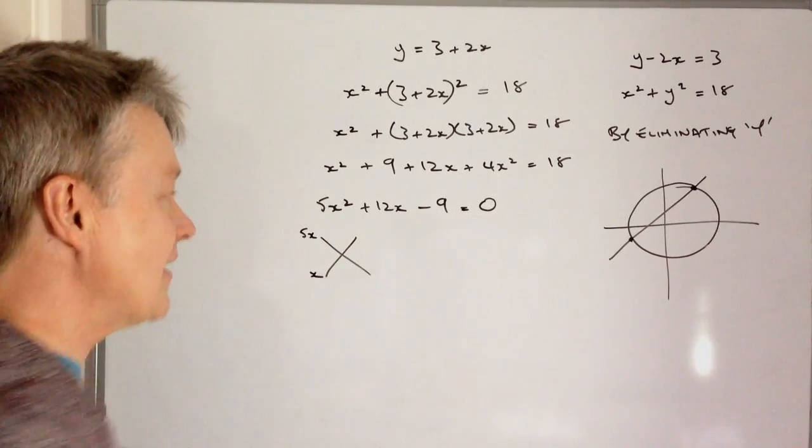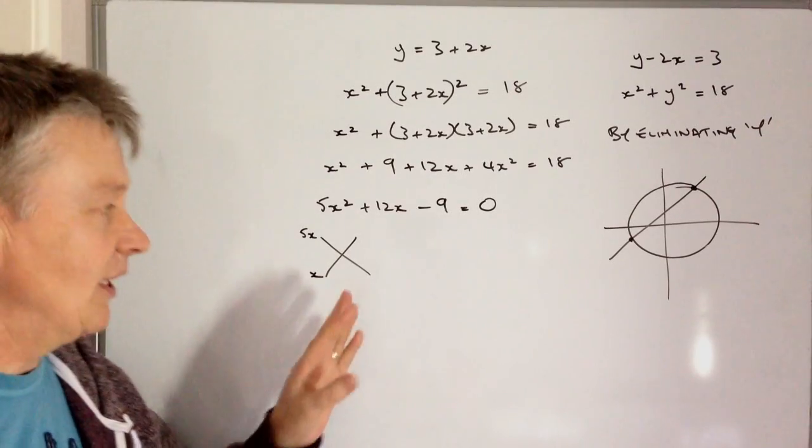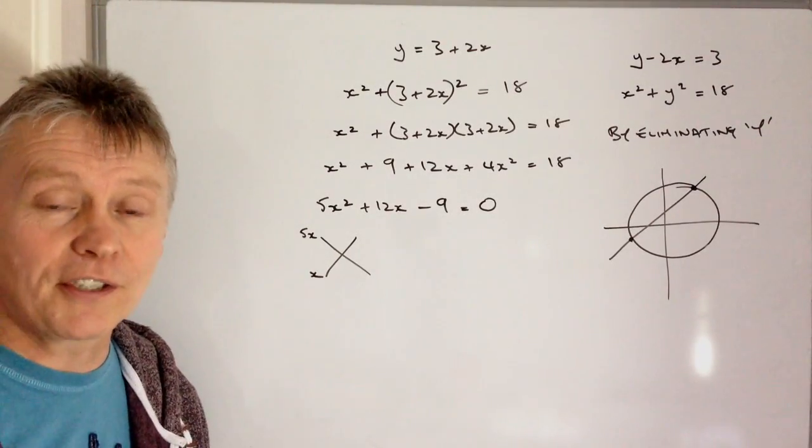Personally, I'm going to use the cross method because I know the two numbers that make 5x squared are going to be 5x and x.